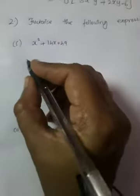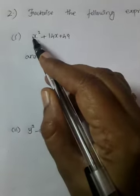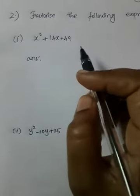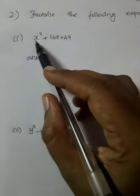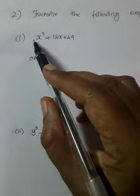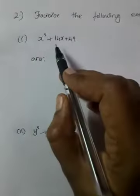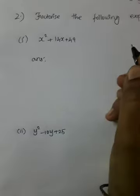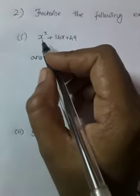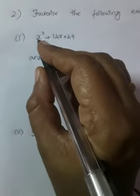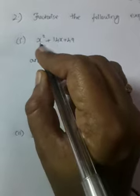The first question is x squared plus 14x plus 49. Whenever you want to do a factorization, first check the first term. Here there is no number or coefficient — only x squared is given. The second term is 14x and the last term is plus 49. If there is no coefficient, take note of the last number, which is plus 49.